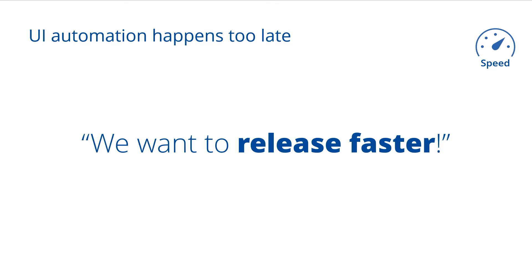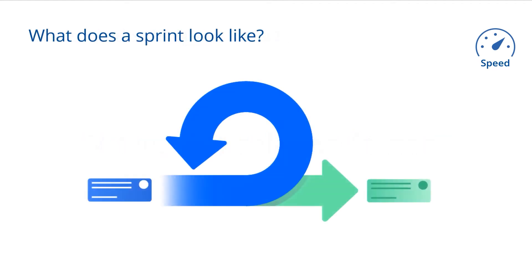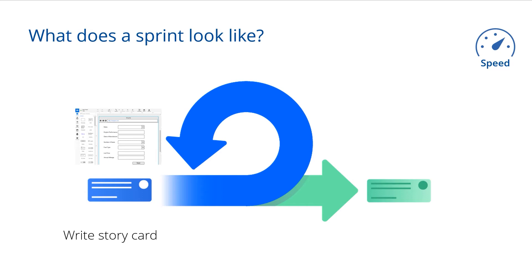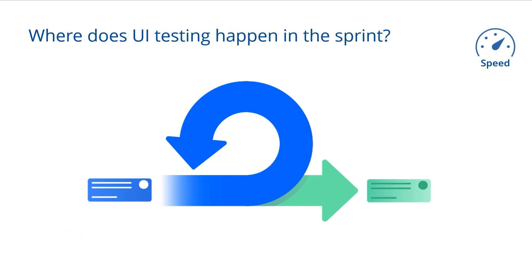The third problem area was around speed. Many customers want to release faster, especially if they're agile and developing DevOps practices. A sprint cycle typically starts with a story card and a mock-up, going through build, test, and deployment cycles. At the UI level, many companies try to implement the BDD approach, where you specify upfront what you want to test. But those BDD frameworks are not your automation — you still have to plug in the automation piece, and this only happens when the user interface is ready and available, which is usually not at the beginning of the sprint.